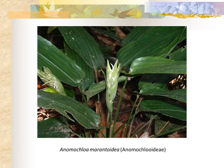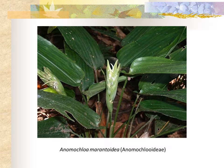Looking at the evolutionary history of the Poaceae, we infer that the original grasses were plants of forest margins or deep shade — these were low-light plants. If we look at the grasses today that represent the basalmost lineages of the Poaceae, they also inhabit more shady environments, such as the plant shown here.